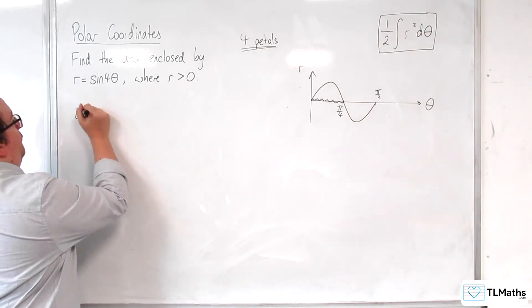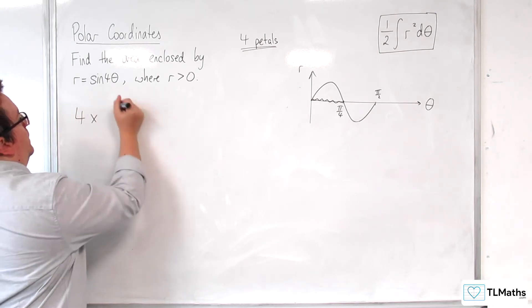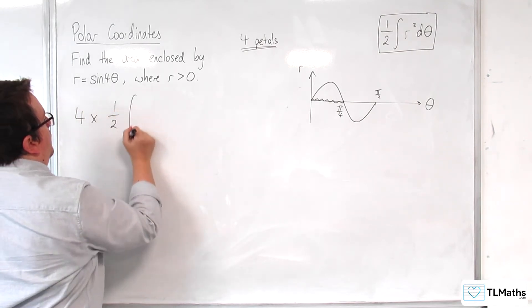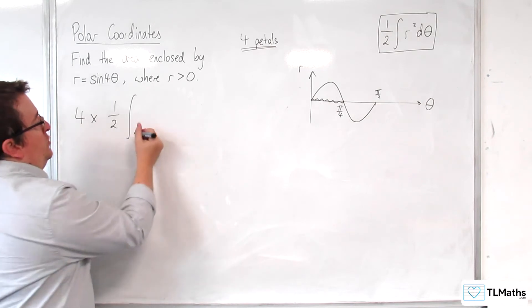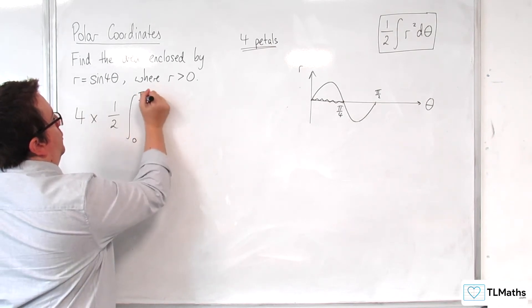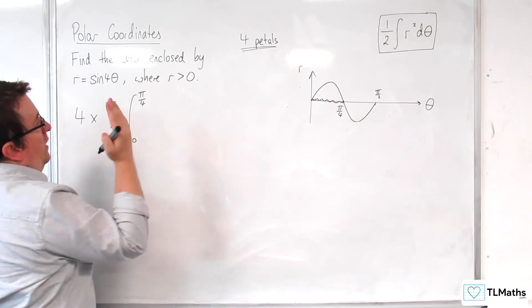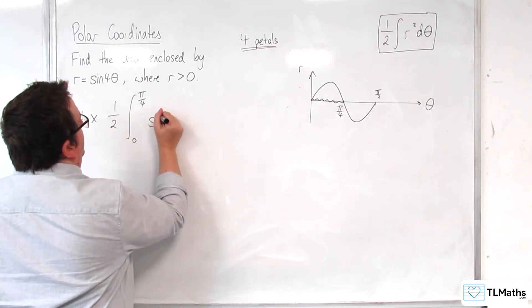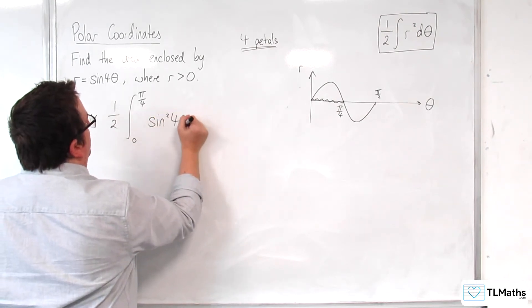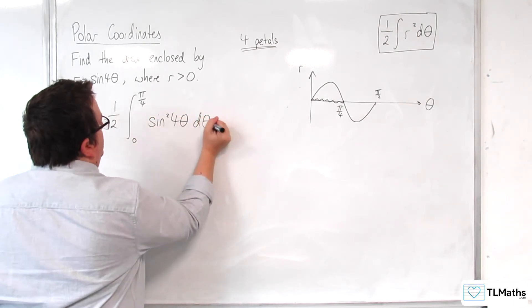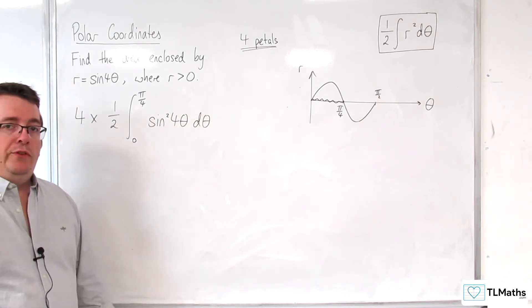So, what I'm looking for is 4 lots of 1 half times the integral between 0 and pi over 4 of r squared, so sine squared 4 theta d theta. This is the integral I want to consider.